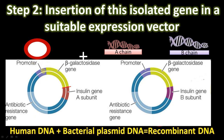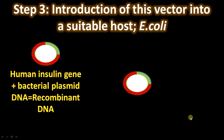There is also an antibiotic resistance gene as a marker for selection of transformed colonies. There is a promoter sequence of E. coli, then a beta-galactosidase gene. Beside this beta-galactosidase gene, the insulin gene is inserted. In the first culture we have the insulin A subunit gene beside the beta-galactosidase gene, and in the second culture we have the insulin B subunit gene beside it, producing a fusion protein in each case.